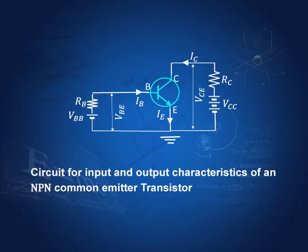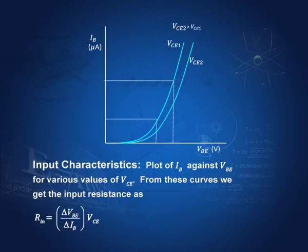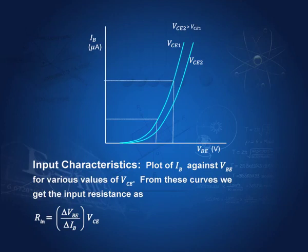For output characteristics, we plot IC against VCE, the potential difference between collector and emitter. For the input characteristics, IB is measured in micro amperes because the base current is really very small. We plot IB against VBE, and this is the kind of curves that we get — one curve for a constant value of VCE, and another curve for a different constant value of VCE.